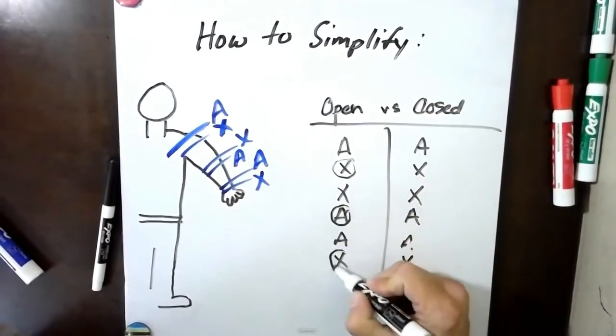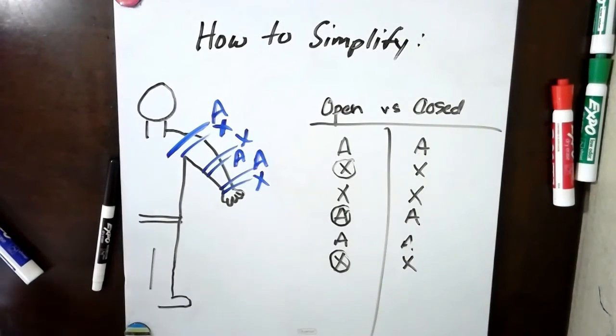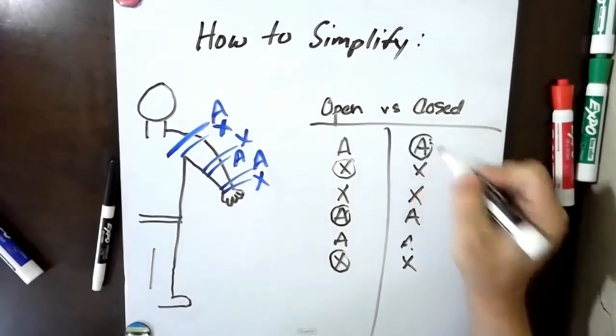Distal, distal, distal. Now the moving bone makes the rule, right? So in the closed chain, now the distal end becomes fixed and the proximal end becomes mobile, so now the proximal bone is making the rule.